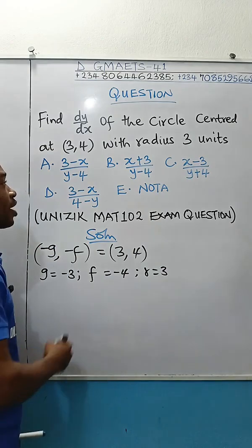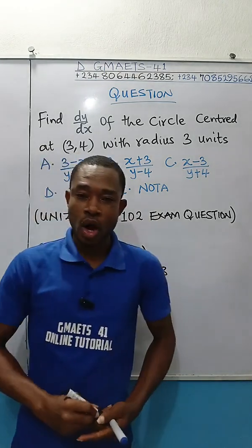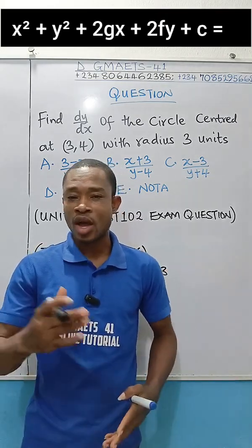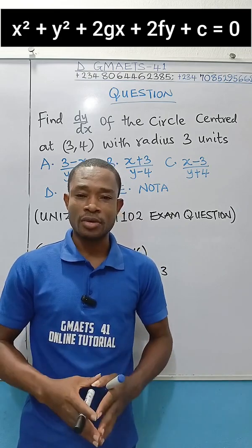Now we're given the radius to be equal to 3 units. Remember, the equation of a circle is given as x² + y² + 2gx + 2fy + c = 0.